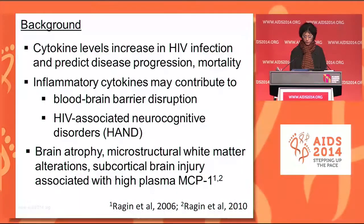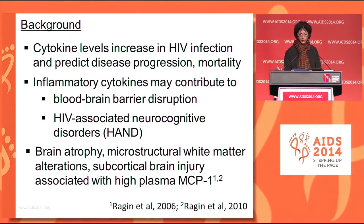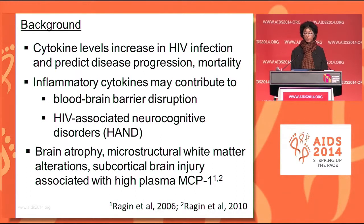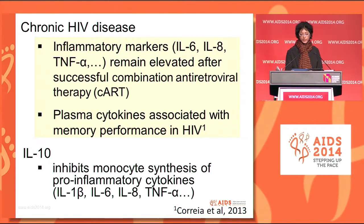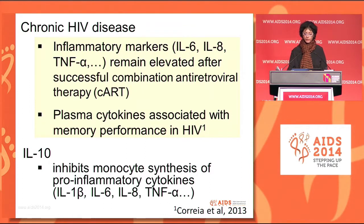Inflammatory cytokines also contribute to blood-brain barrier disruption and facilitate HIV entry into the brain, and therefore play a role in HAND. Some previous studies have associated high plasma MCP-1 with brain atrophy and white matter changes. In chronic HIV disease, even after effective combination ART, many inflammatory markers remain elevated. Neurocognitive measures in chronic disease have also been associated with plasma cytokines.